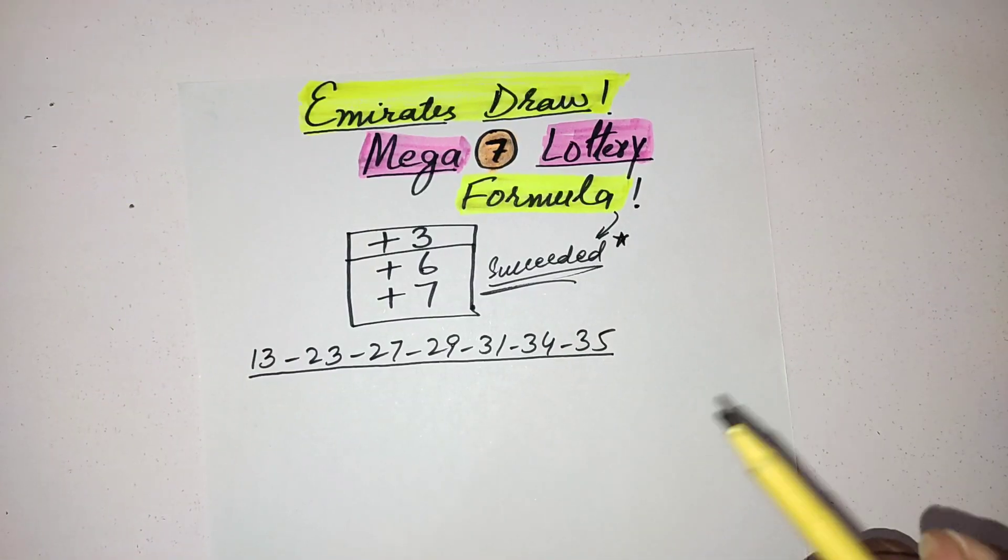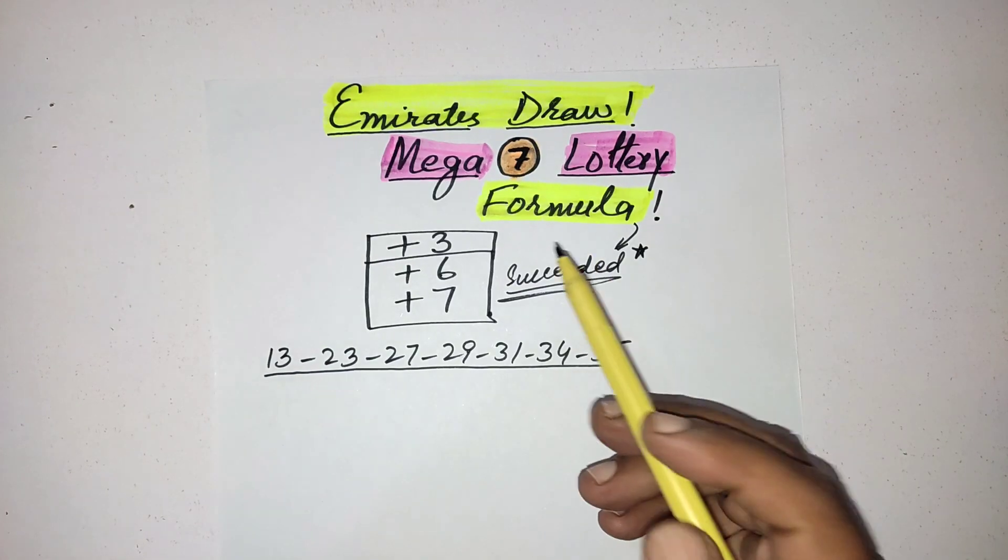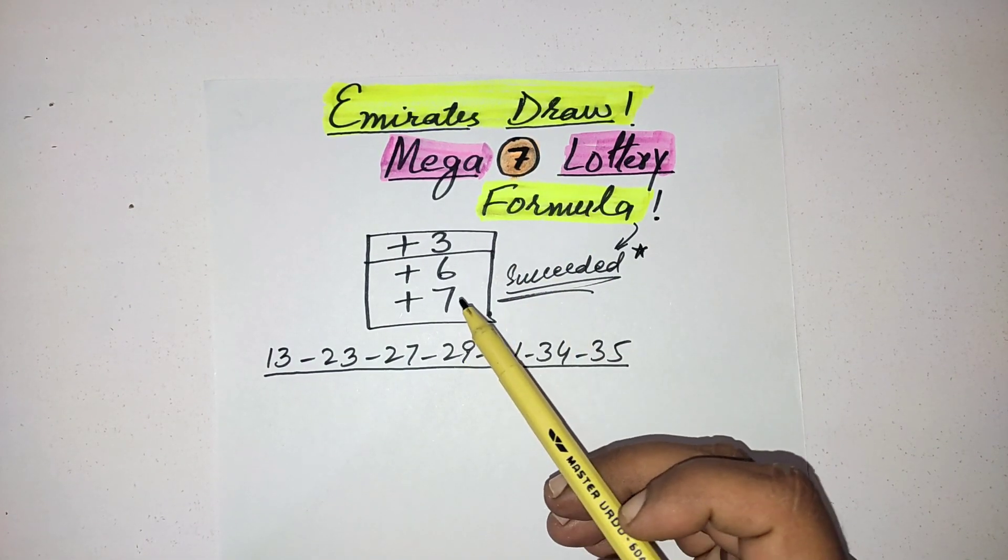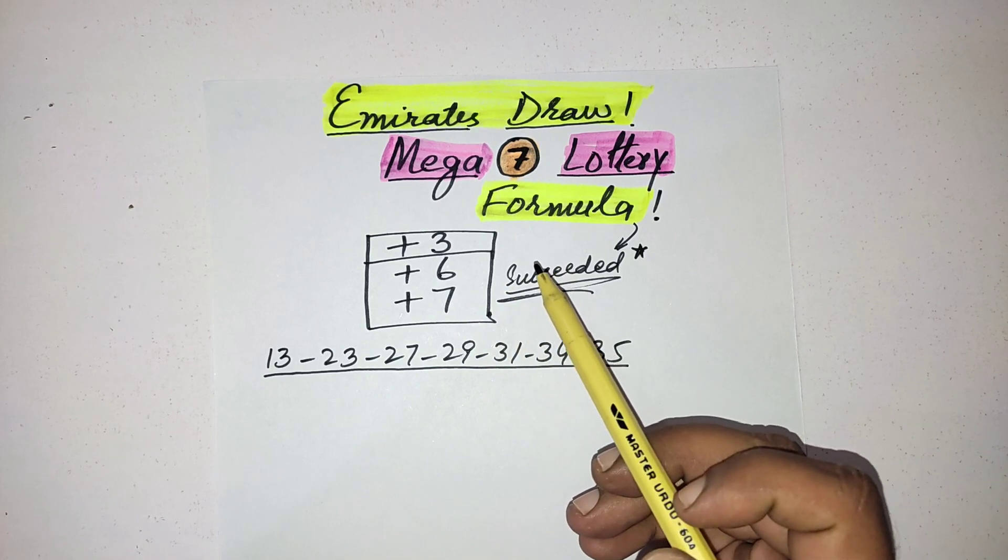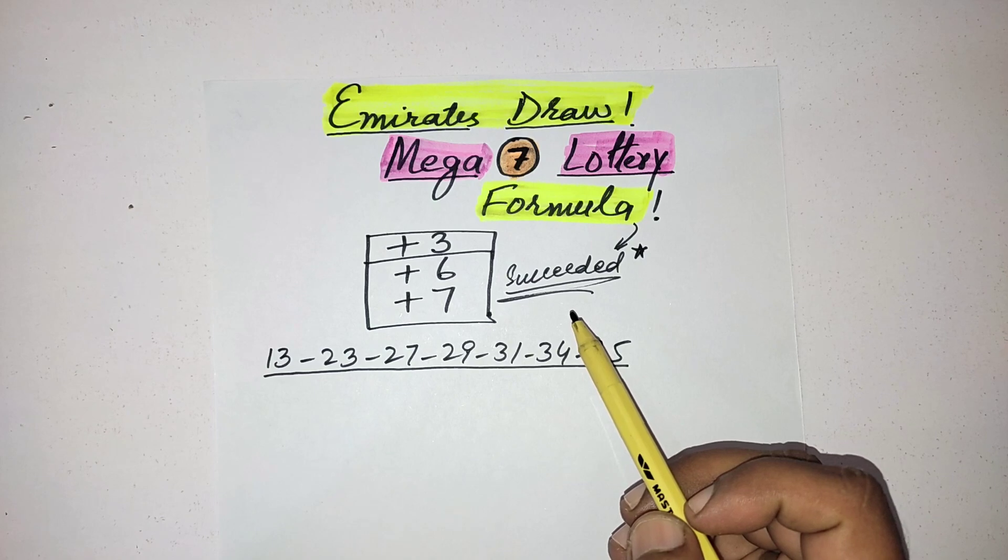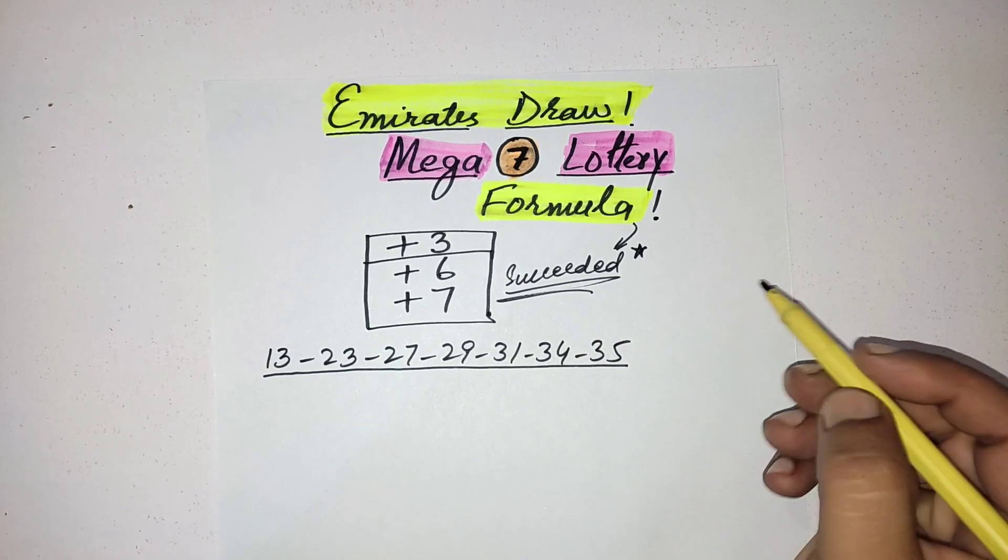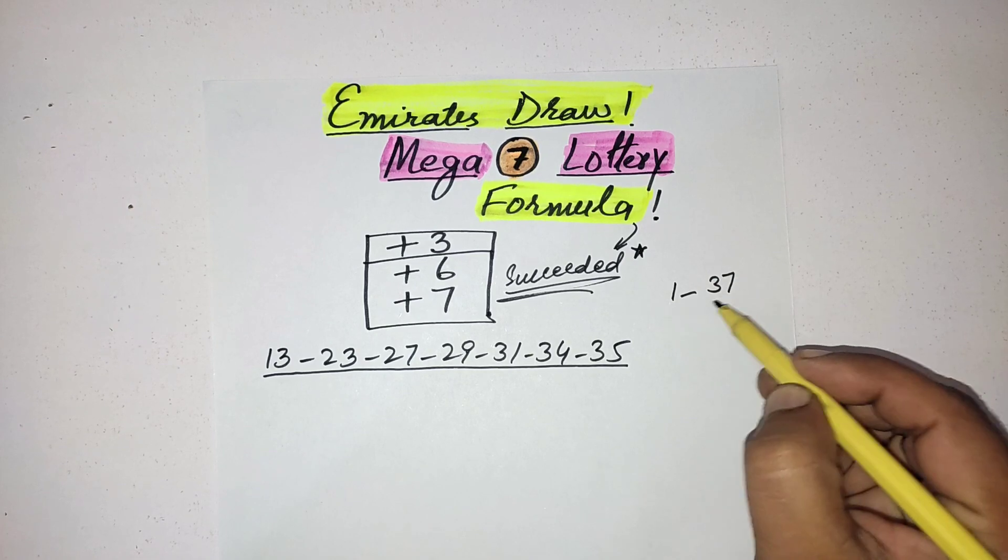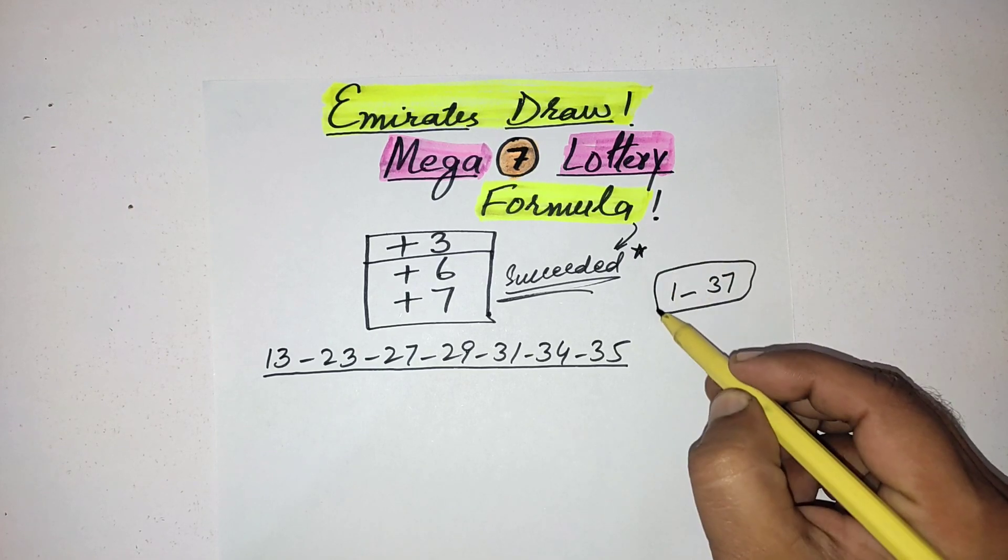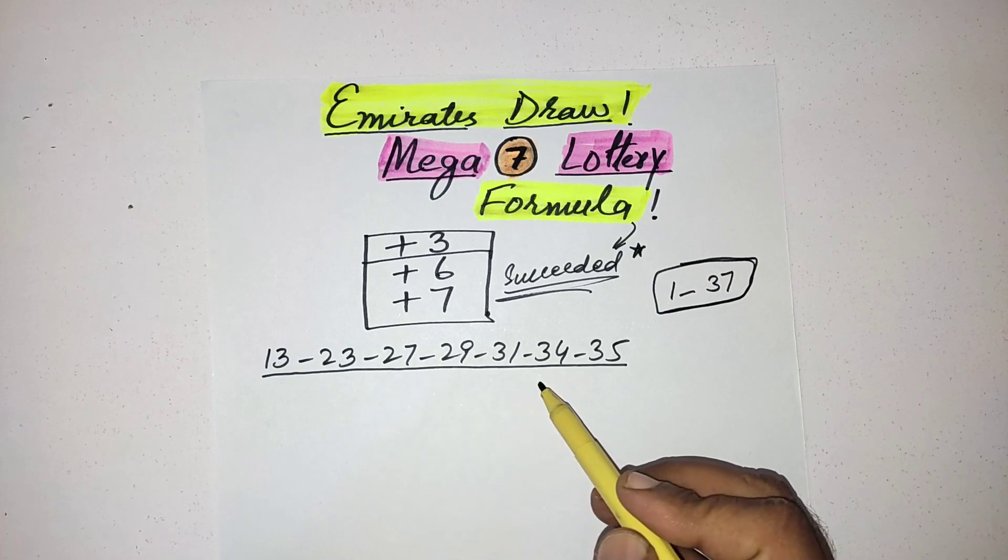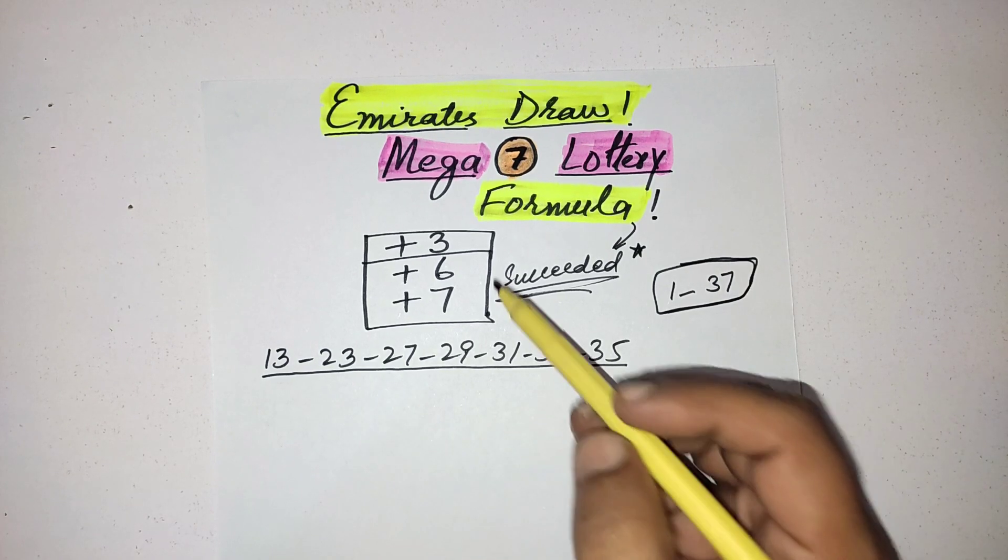Hi my friends, many friends asking me for this lottery Mega 7. This is the UAE biggest lottery, so I am come up with my best formula. This is already succeeded many times. You already know that this lottery the biggest number is 37, 1 to 37, select the 7 numbers. This is the previous result of this lottery, these are the best code.